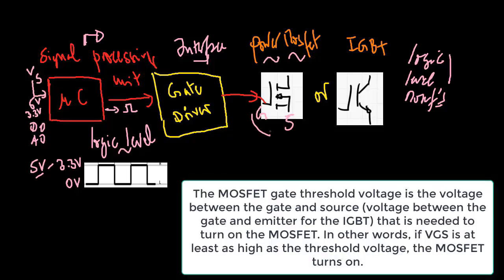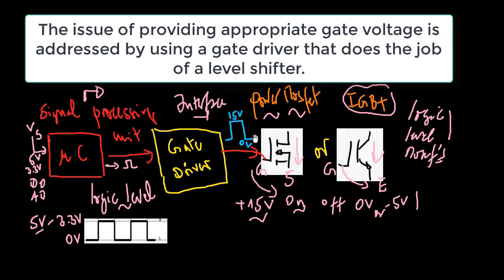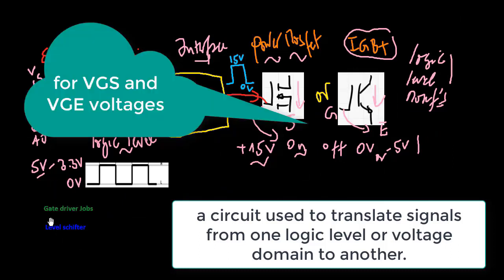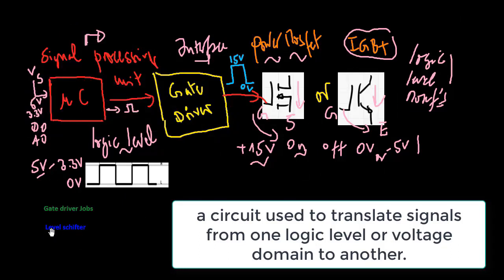The MOSFET gate threshold voltage is the voltage between the gate and source that is needed to turn on the MOSFET. In other words, if VGS is at least as high as the threshold voltage, the MOSFET turns on. The issue of providing appropriate gate voltage is addressed by using a gate driver that does the job of a level shifter circuit used to translate signals from one logic level or voltage domain to another.